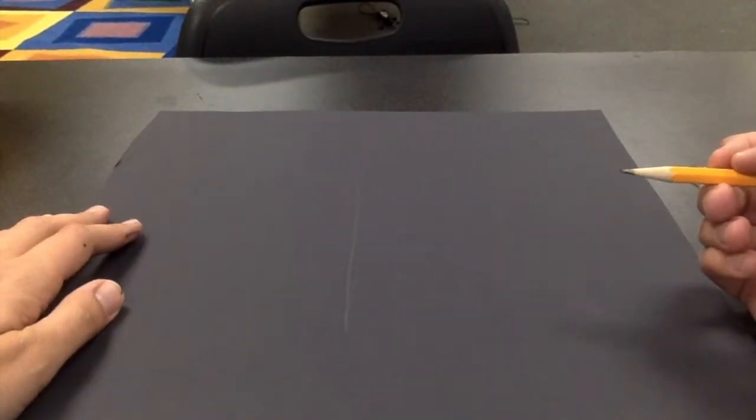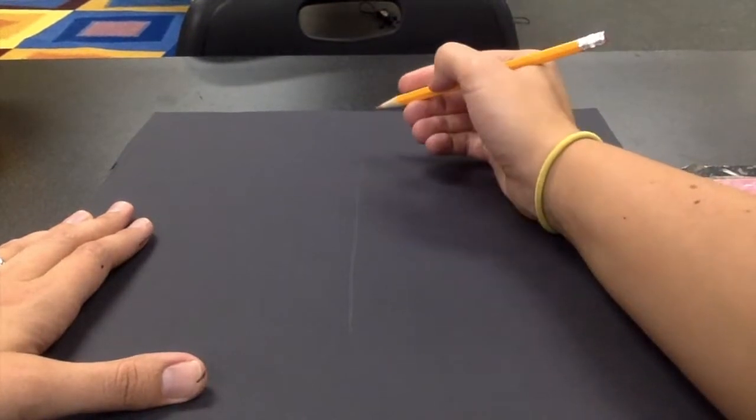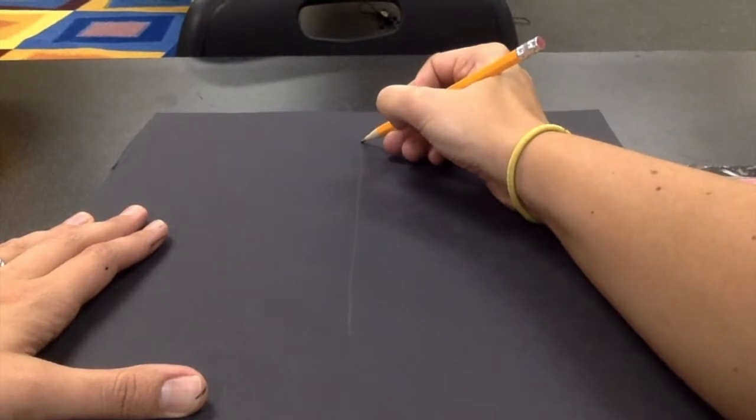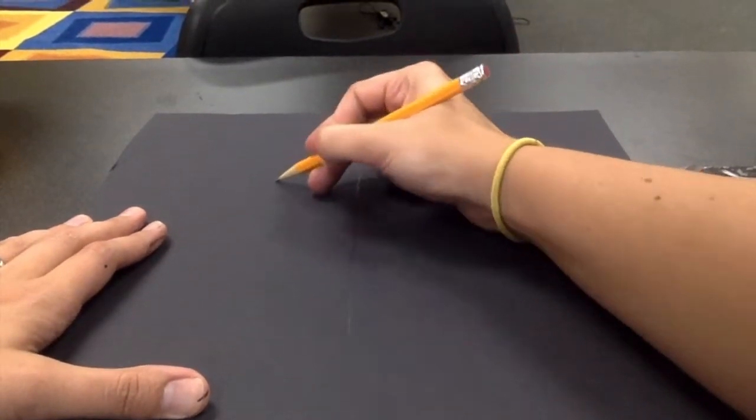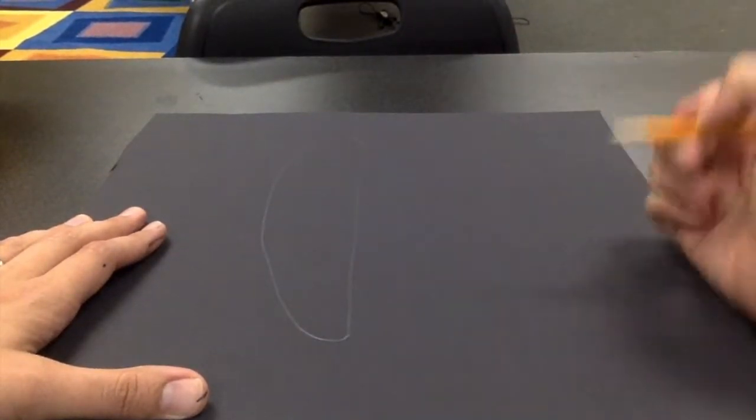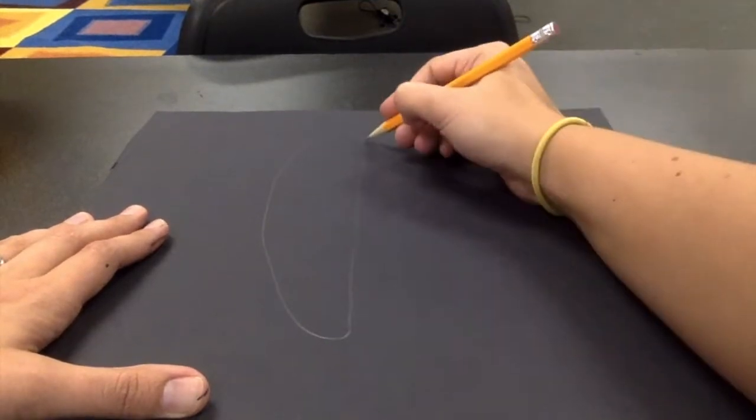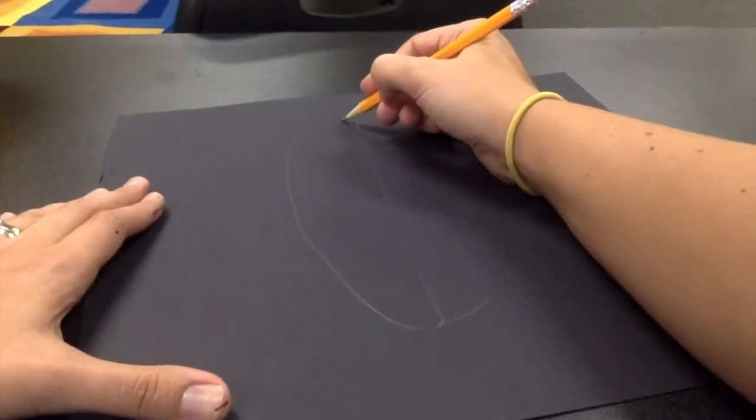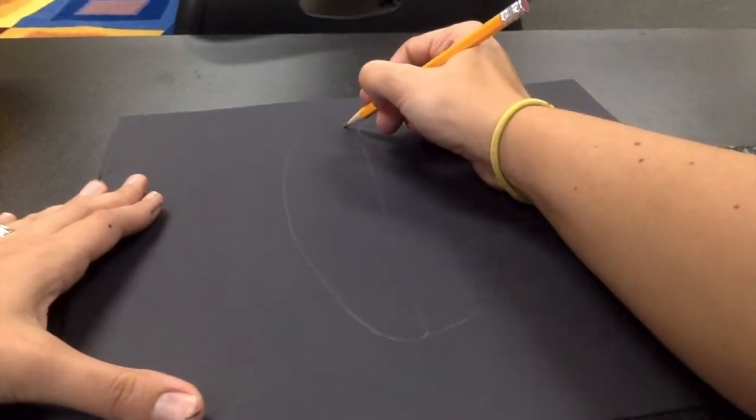Now here's where the pumpkin gets easy. Everyone can draw the letter C, so what I want you to do is draw a letter C in the air. It's curved, C for curved. Take your pencil at the top of that line, you're going to draw a C all the way to the bottom, then you're going to go to the other side and draw a backwards C.